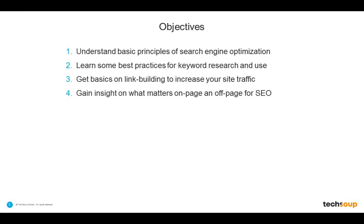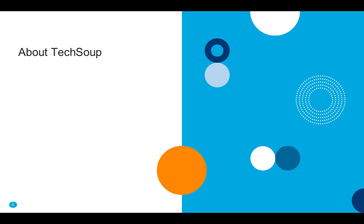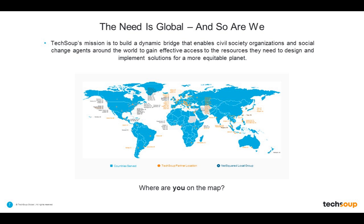Before we get started with this content, I'm going to do a quick overview of TechSoup for those of you who may not be familiar with us. We are everywhere on the map that's blue in this picture, which is almost everywhere in the world, and we are providing a dynamic bridge that connects civil society organizations and social change agents around the world with the resources that they need to implement solutions for an equitable planet. We are a nonprofit and we've been around since 1987, headquartered in San Francisco. Could you chat in to let us know from where you are joining us today?